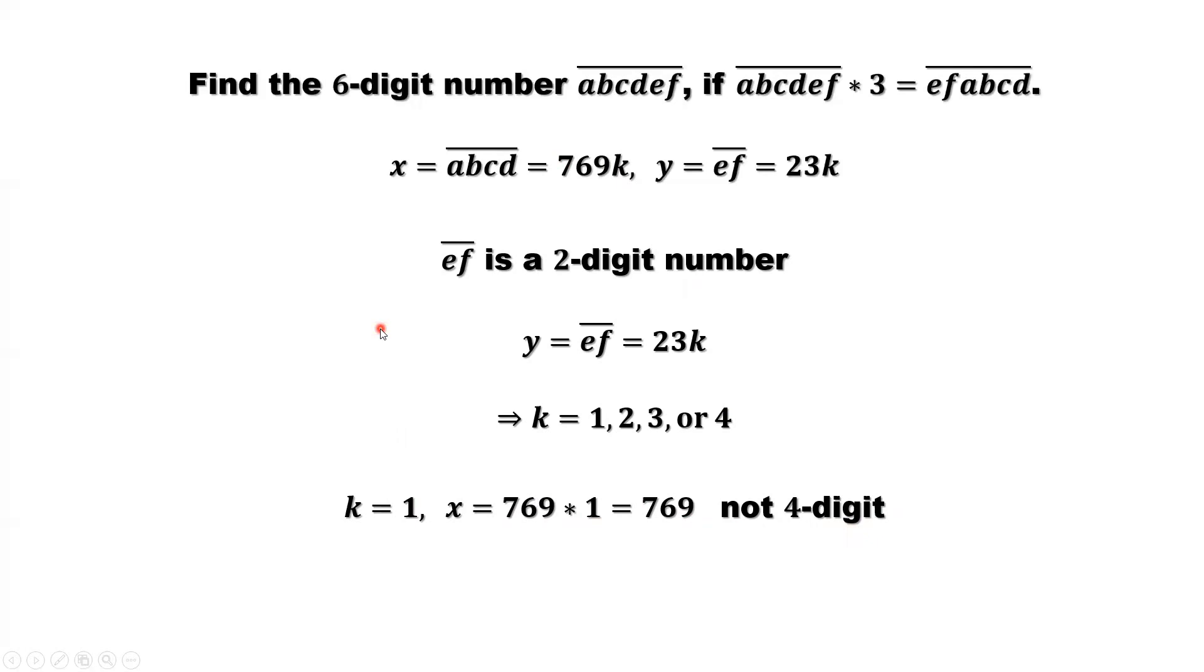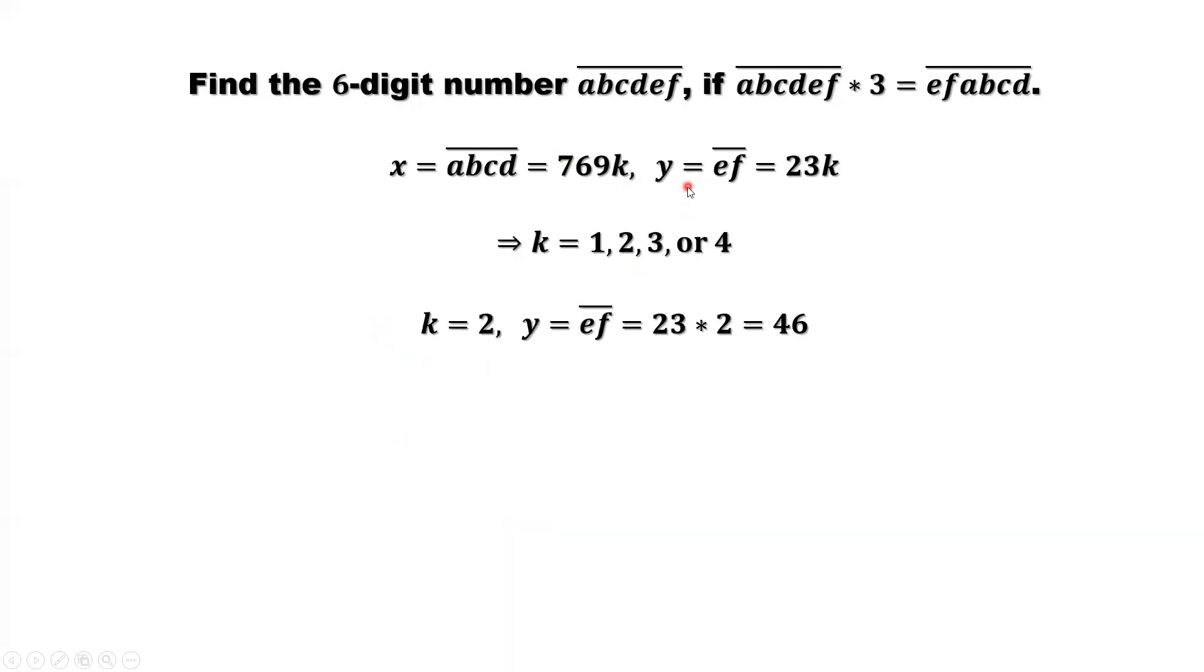Let's check K equals 2. Y equals ef equals 23 times K. 23 times 2, the last 2-digit of the 6-digit number is 46. What is X? X is the first 4-digit equals 769 times 2. Based on this formula here. Equals 4-digit. That's 1538. We find the first solution. We have abcd here. We have ef here. Put those 6 numbers together. That's 153846. This is the first solution.